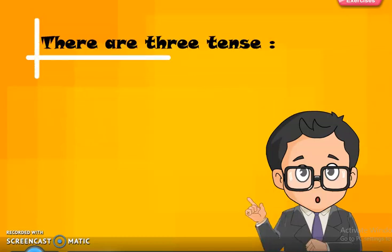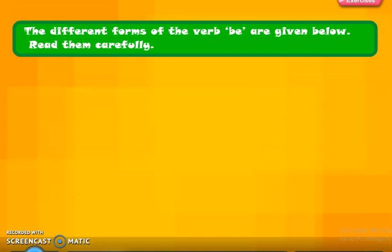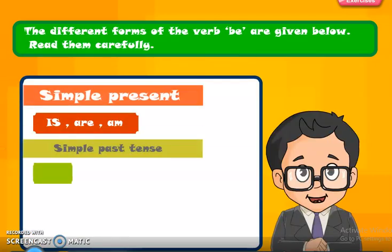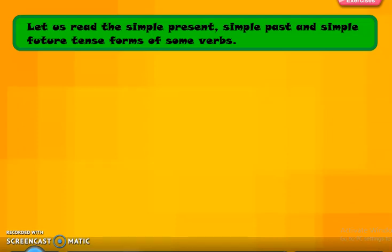There are three tenses: present tense, past tense, and future tense. The different forms of the verb 'be' are given below. Simple present tense uses 'is', 'are', 'am'. Simple past tense uses 'was' or 'were'. Simple future tense uses 'will be' or 'shall be'. Now let us read the simple present, simple past, and simple future tense forms of some verbs.